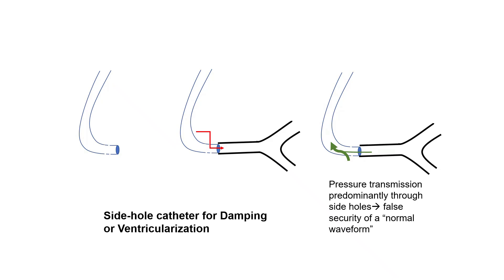A note regarding side hole catheters and their lack of value: a side hole catheter has holes beside the tip. When you're damped or ventricularized, those side holes allow shunting of blood from the aorta into the coronary, providing some flow in theory. However, caveat one: those tiny holes provide only marginal flow — a few percent — and do not significantly attenuate ischemia. Caveat two: they make ventricularization and damping appear to improve not because you're improving coronary flow, but because you're getting pressure transmission through the side holes — contaminated pressure, not just tip coronary pressure. This gives false reassurance — a false sense of security.